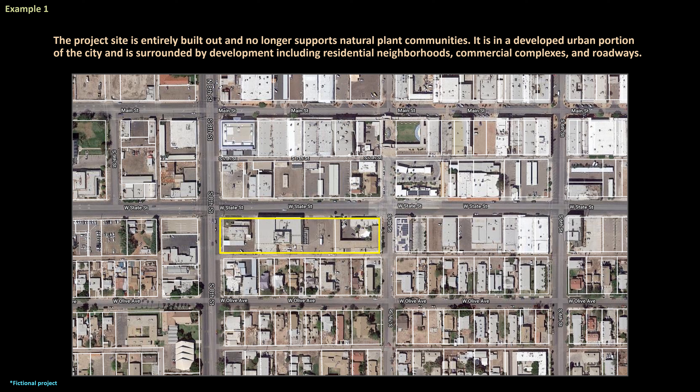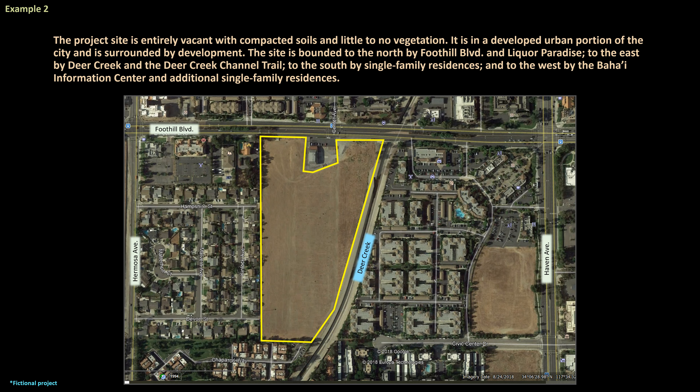Example 1. If we look at the project site outlined in yellow on this slide, we would report the following: The project site is entirely built out and no longer supports natural plant communities. It is in a developed urban portion of the city and is surrounded by development including residential neighborhoods, commercial complexes, and roadways.